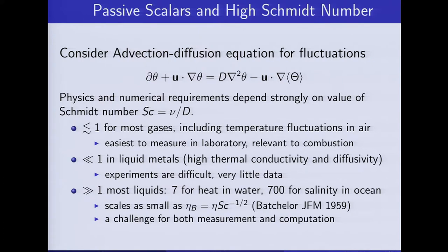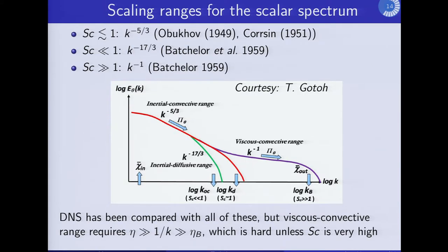The form of the scalar spectrum shows very different power laws depending on which Schmidt number regime we are in. There have been DNS results that can be compared with all of these regimes. The most difficult thing to do is get at the viscous-convective range, because you need a very high Schmidt number, and that requires making the grid spacing very small compared to what you use for the velocity field itself.